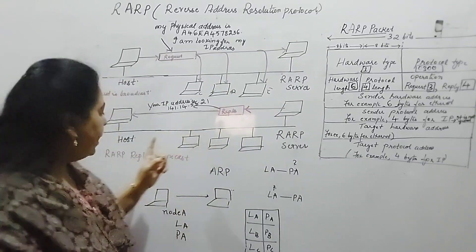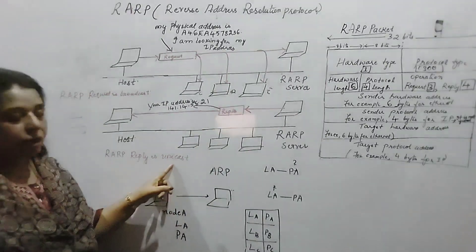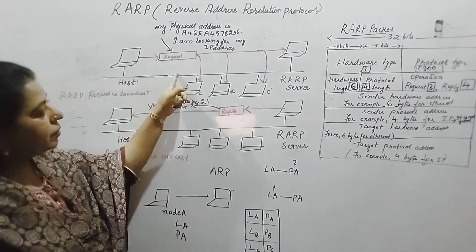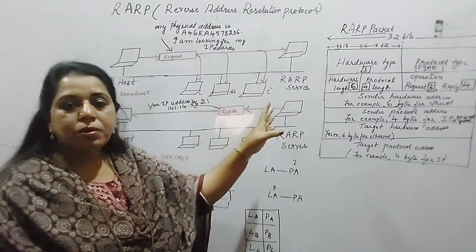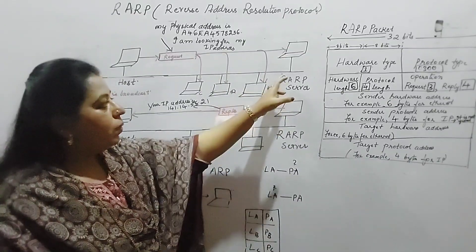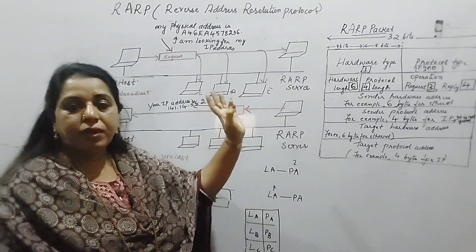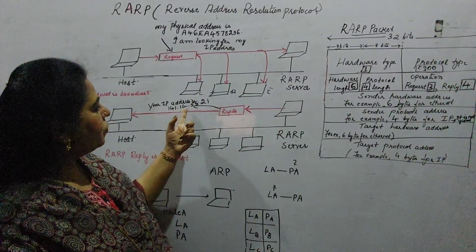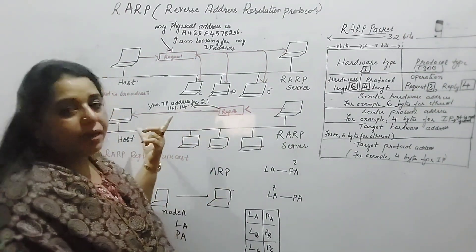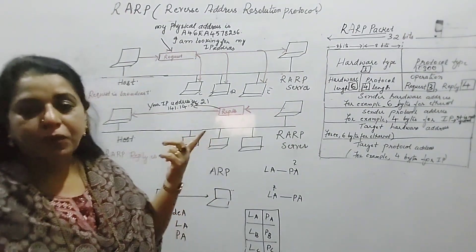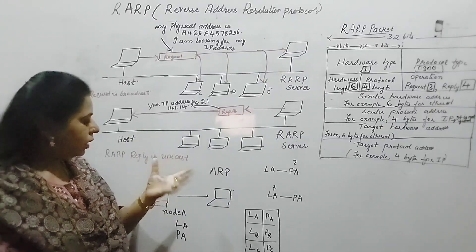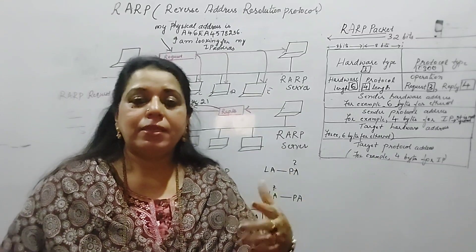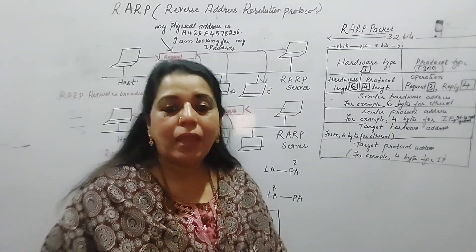The RARP server sends a unicast reply — one-to-one, not to all hosts. The RARP request is broadcast to all, but only the RARP server replies. The reply states: your IP address is 141.14.56.21. The node now gets its logical address. Once you know the functioning of ARP, it is easier to understand RARP as well.